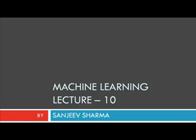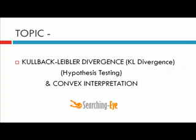Welcome to lecture number 10 in the machine learning section. This lecture is about Kullback-Leibler divergence and the convex interpretation of Kullback-Leibler divergence, known as KL divergence in short. It is used in many algorithms such as the expectation maximization algorithm and expectation propagation algorithm. It is also used in hypothesis testing, for example to determine the number of parameters for a regression model or to choose the dimensionality of your parameters.